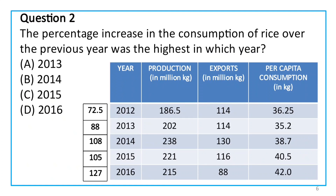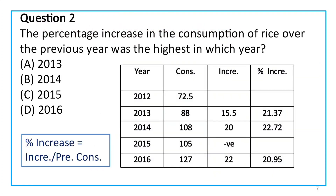The next question: the percentage increase in the consumption of rice over the previous year was the highest in which year? We need to find which year had the highest percentage increase in consumption. We already have the consumption values. The percentage increase is calculated by dividing the increase over the previous year by the previous year's value, then putting it in the numerator.